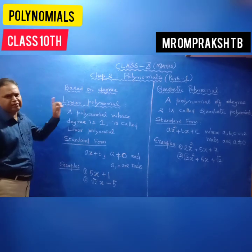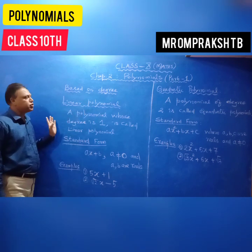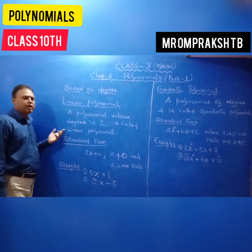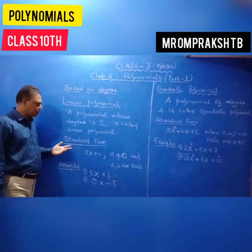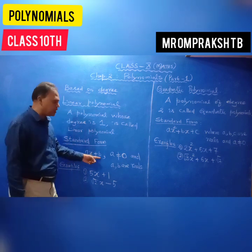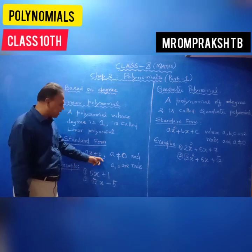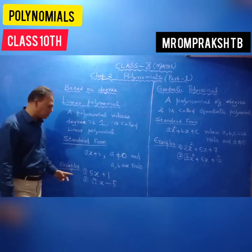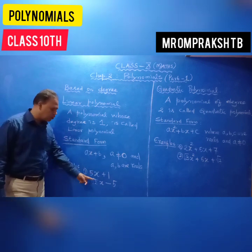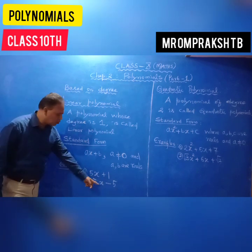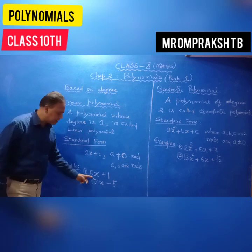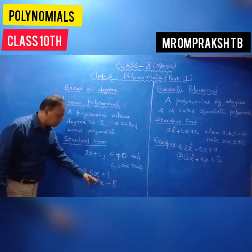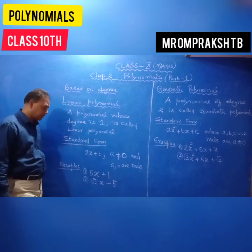Based on degree: a linear polynomial is a polynomial whose degree is 1. Its standard form is ax plus b, where a is not equal to 0 and a, b are real numbers. For example, 5x plus 1, and root 2x minus 5, because the coefficients a and b are real numbers — root 2 is a real number, actually an irrational number, but all rational and irrational numbers are called real numbers.